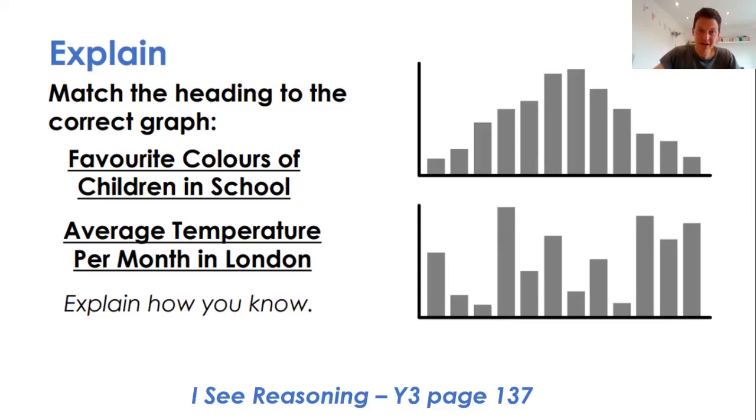So here for children to recognize favourite colours of the children in school, that'll just be a random pattern, whereas average temperature per month in London, it will start lower at the beginning of the year, it will increase and decrease, and therefore that must be the top graph.